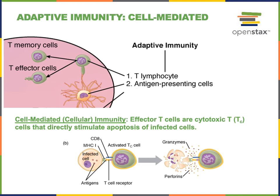The cell-mediated branch of the adaptive immunity involves effector T cells called cytotoxic T cells. When a T lymphocyte is activated by antigen binding to its T cell receptor, that T lymphocyte will divide to make many more T lymphocytes that all have the same shape T cell receptor that can be activated by the same antigen associated with a specific pathogen. Some of the T lymphocytes produced will be T memory cells, providing immunological memory to that specific infection, and some will be effector T cells.